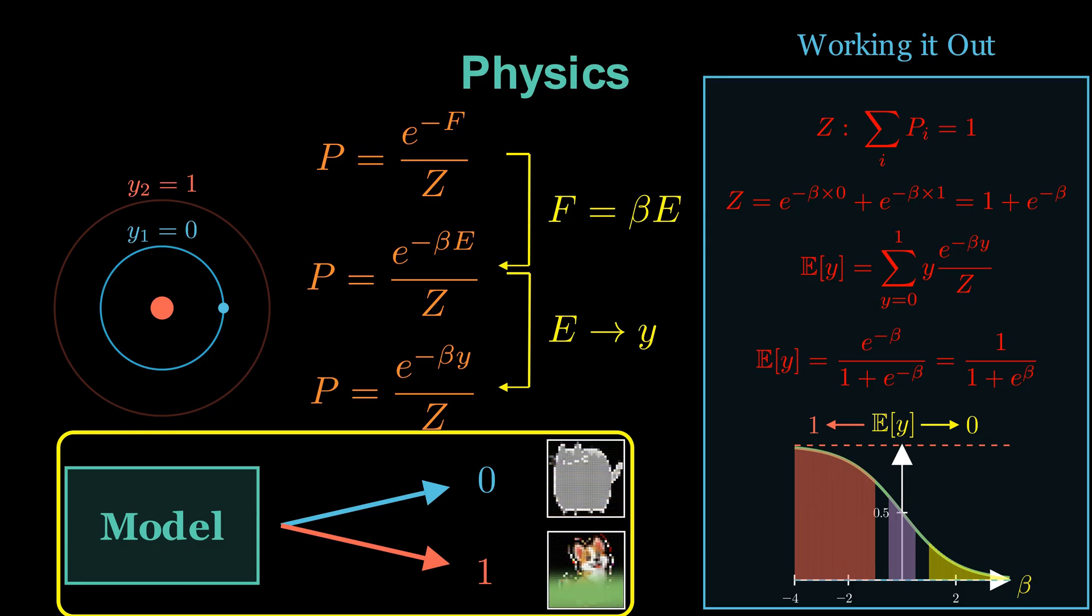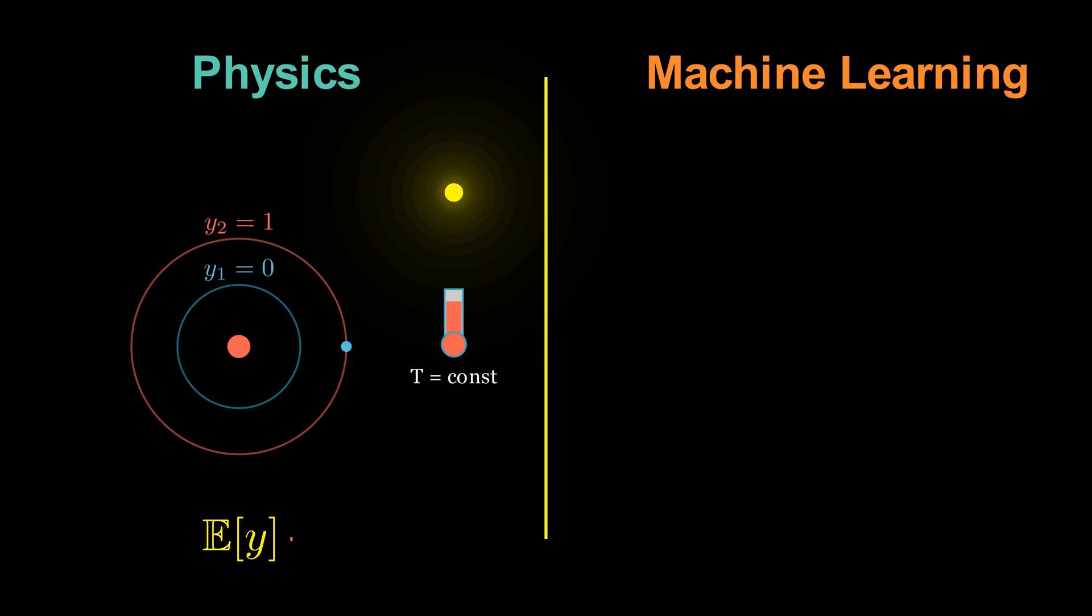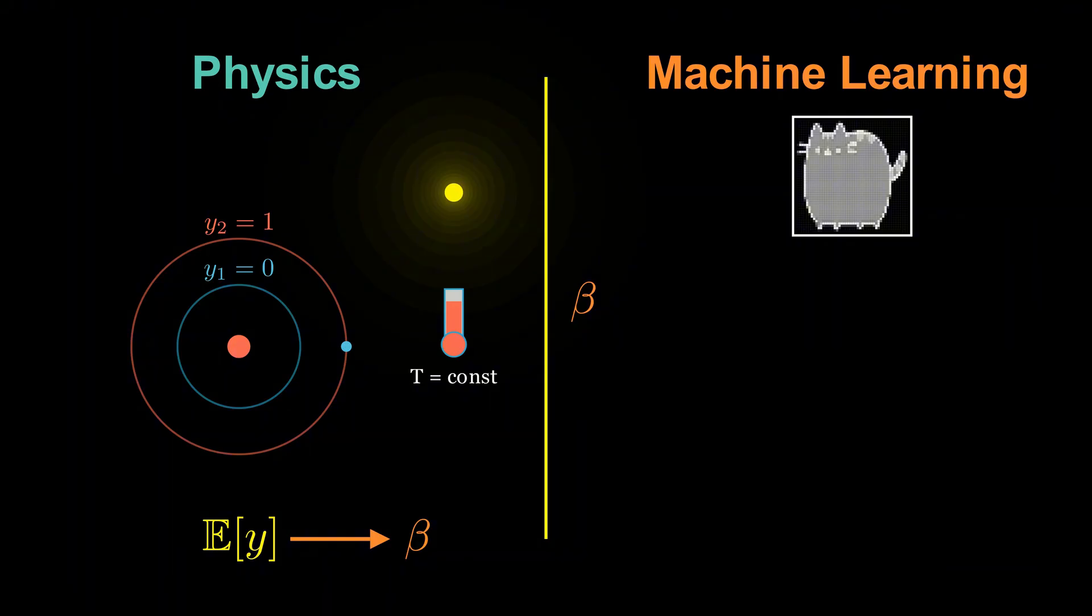Let's go one step deeper and make the correspondence explicit. In physics, we said the expected value of Y depends on beta. In machine learning, the equivalent quantity that controls the shape of the sigmoid curve is the linear combination of input features. In our example, these are the pixel values of images. Here, each X sub i is one feature, one pixel in our example, and each W sub i is a free parameter of the model that needs to be learned. When we substitute this expression for beta into our physics-inspired probability, we obtain the probability distribution for the logistic regression in machine learning.